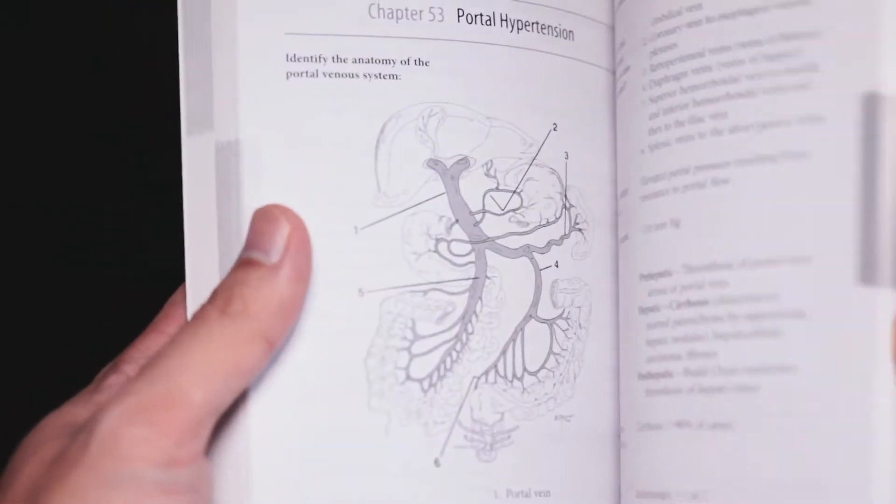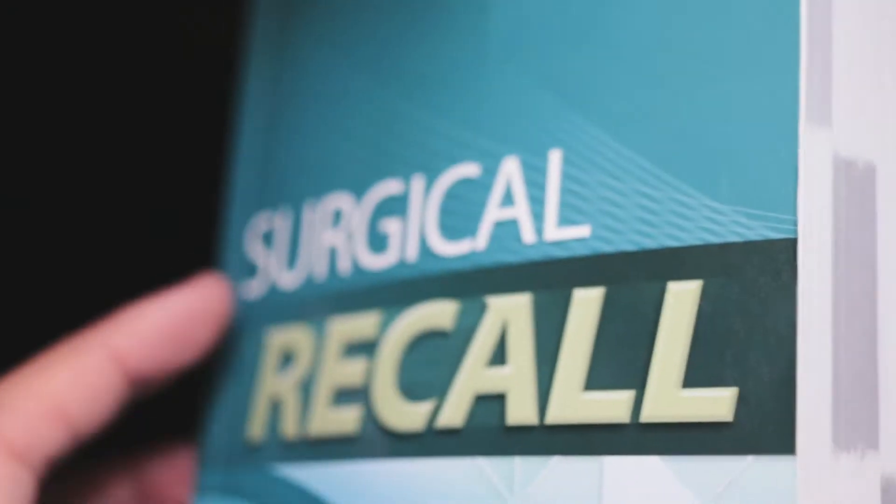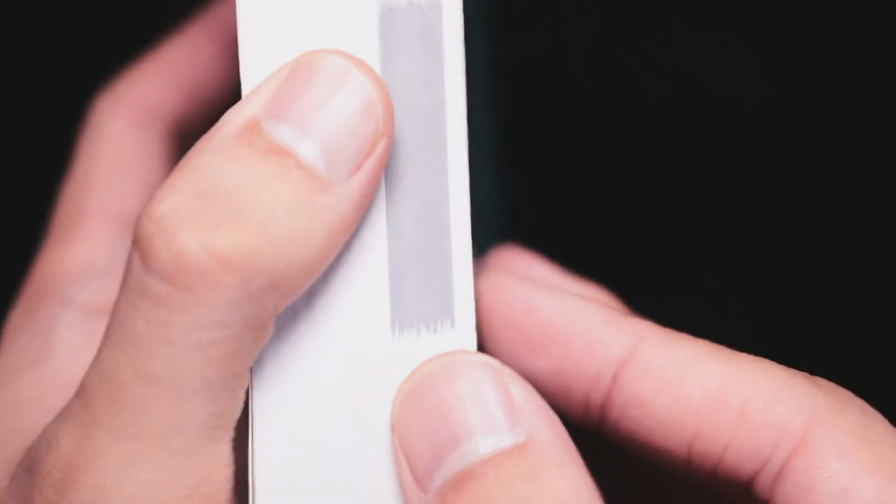The first section is on general surgical concepts, perioperative management and also a bit of ward management. The second section of the book is all general surgery and the third part of the book is a lot of subspecialty surgeries such as neurosurgery, pediatric surgery, orthopedics and urology.